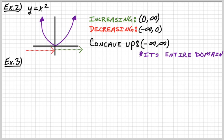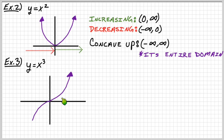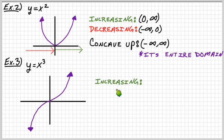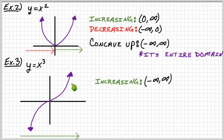Example three: why don't we do x cubed? If you read it from left to right, it looks like you're always riding the train upward — it's always got an upward trend from left to right. So actually it's increasing all the time, from negative infinity to infinity. And if it's increasing everywhere, there are no intervals where it's actually decreasing — decreasing: none.